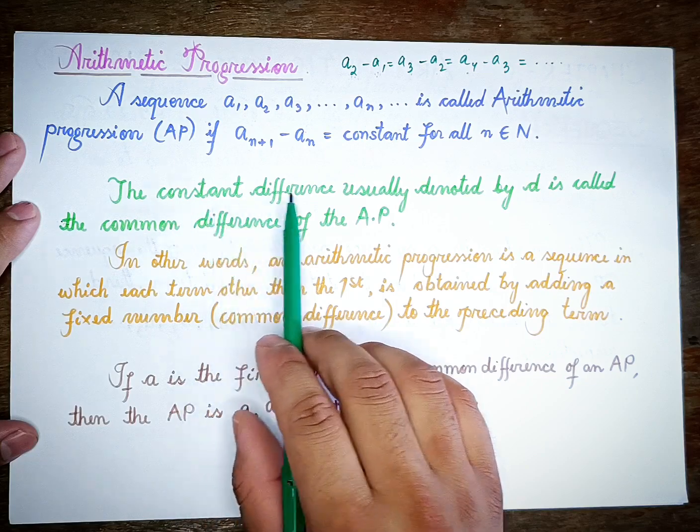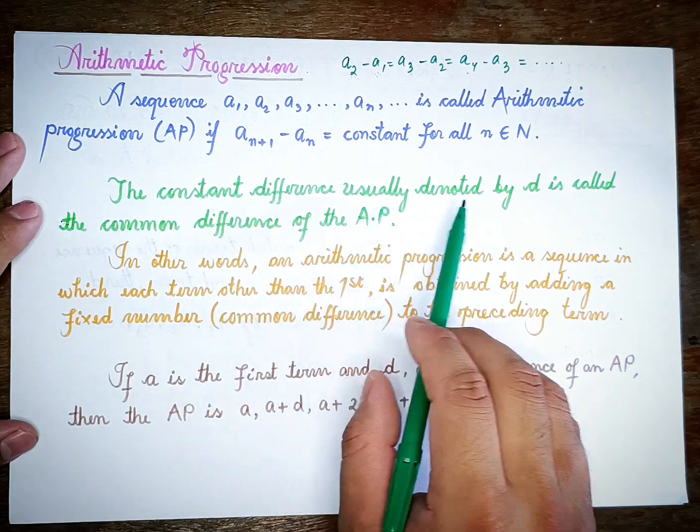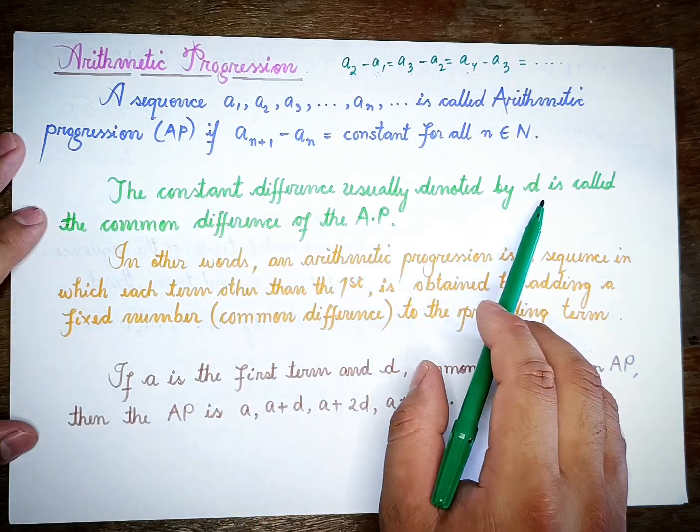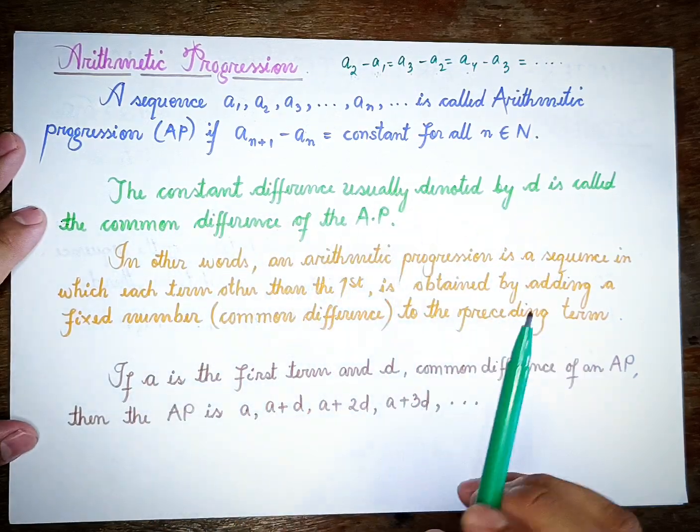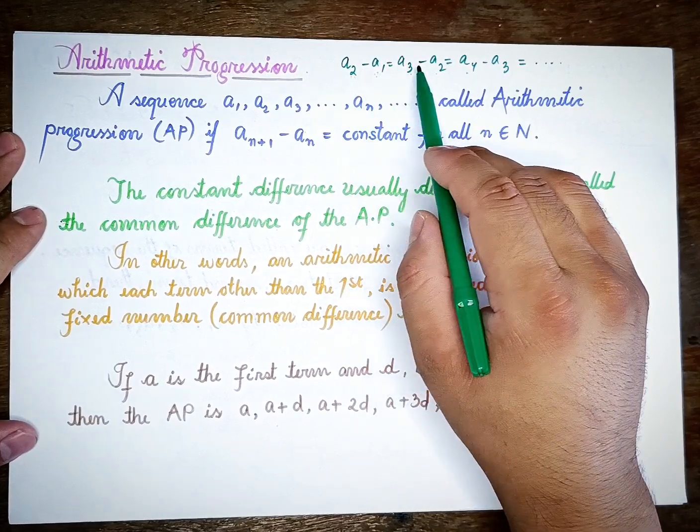The constant difference, usually denoted by D, is called the common difference of the AP.